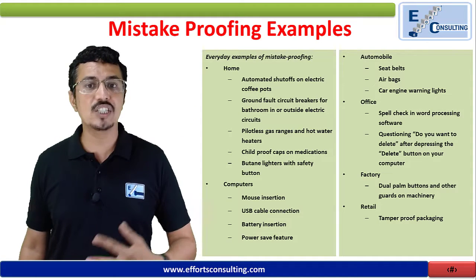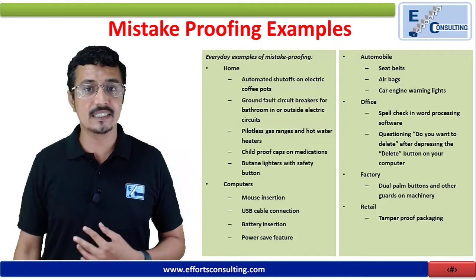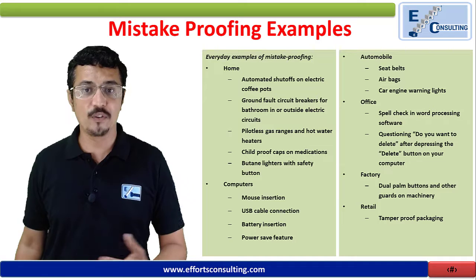In automobiles: child locks, seat belts, airbags, and engine warning lights are examples of mistake proofing. In offices: spell check in word processing software and the 'Do you want to delete?' prompt are mistake proofing examples. Entering a wrong password and getting a popup is also mistake proofing. In factories: dual palm buttons, machine guards, and machines that won't run when your hand is inside are examples. Tamper-proof packaging is an example in retail.